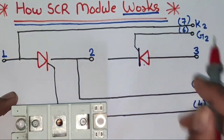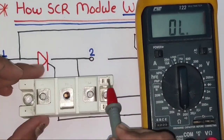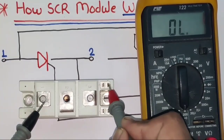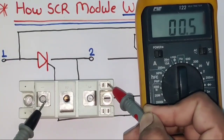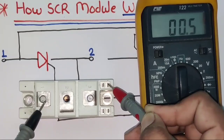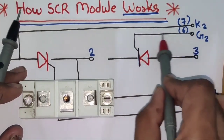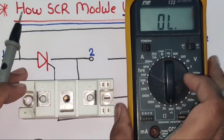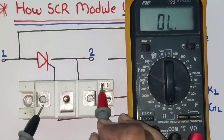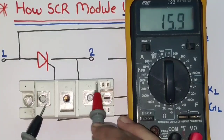Terminal 7 is directly shorted to terminal 1, so checking from terminal 7 to 1 should show a short. Terminal 6 connects to the second SCR gate terminal, so between terminals 1 and 6 it should show resistance between 12 to 16 ohms. You can see here.